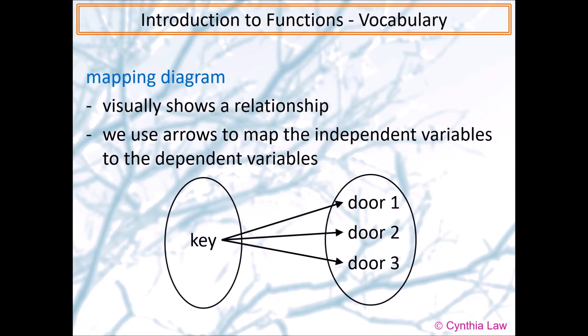Here's an example. From before, we talked about that we can use a master key to open different doors. So from the key, I have three arrows going to the three doors. Okay, so key is independent of the doors. Because it might open more than three doors, and which door can be opened depends on my master key. So this is our one-to-many relationship. And this scenario, I can tell you right now, it is not a function.